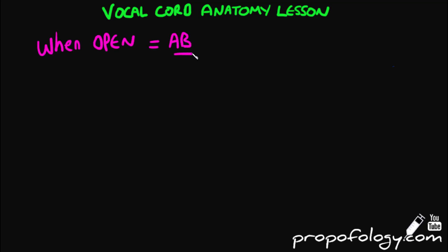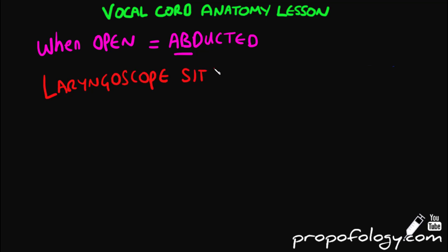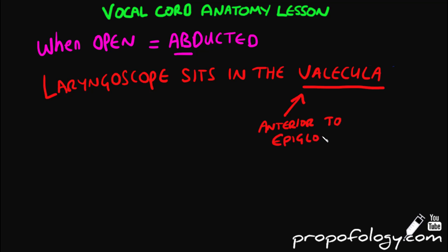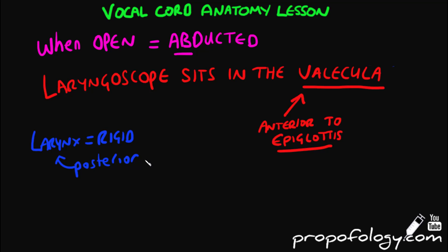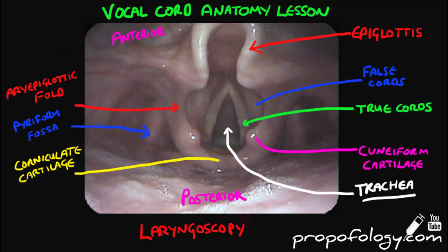Some extra points to consider: when the cords are open, that means they're abducted; when they're closed, they're adducted. The laryngoscope that you're using will sit in the vallecula, which is anterior to the epiglottis. The larynx is a rigid structure, and posterior to it lies the esophagus.